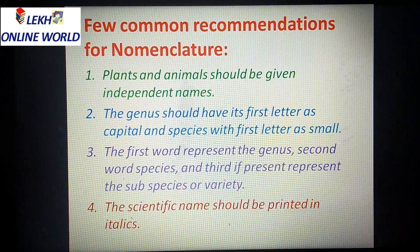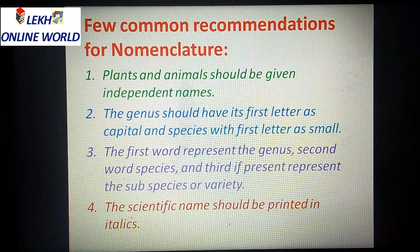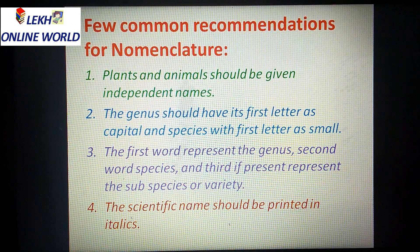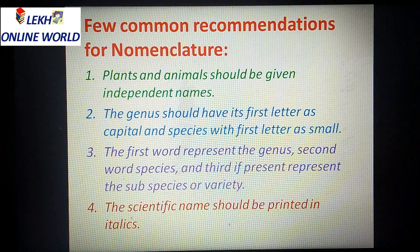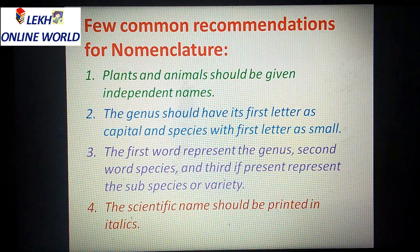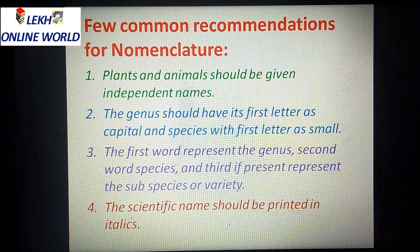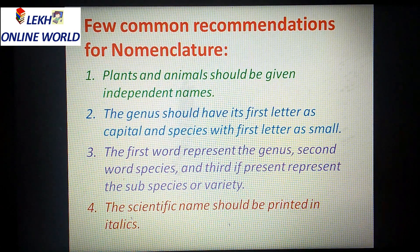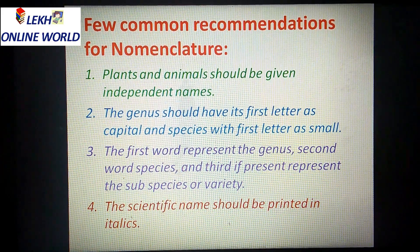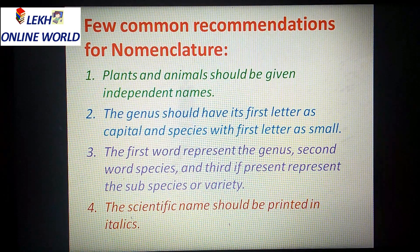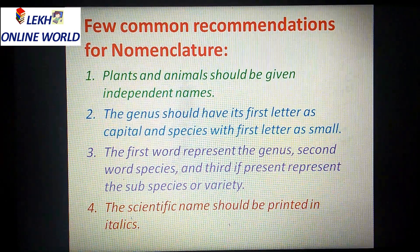Now coming to the recommendations for nomenclature. These are rules for nomenclature that we also covered in the binomial nomenclature classification earlier. The first recommendation is: plants and animals should be given independent names — it is compulsory to give them independent names.